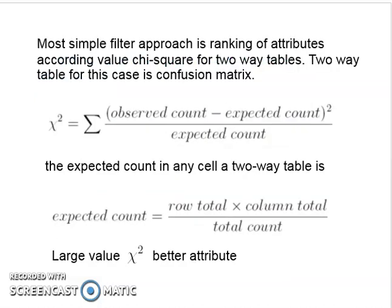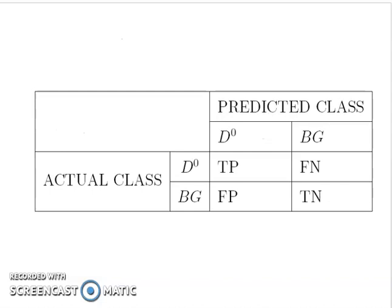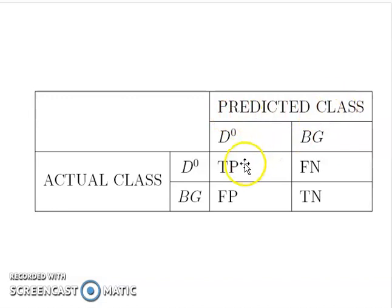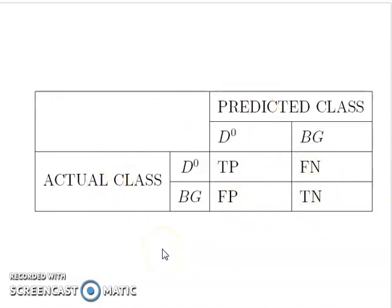The most simple filter approach is ranking of attributes according to the chi-square of two-type variables. We use a confusion matrix with actual class and predicted class. The confusion matrix contains: True Positive, False Positive, False Negative, and True Negative rates.